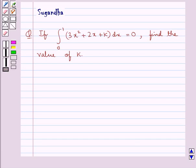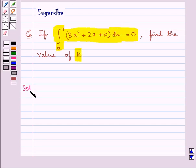Hello and welcome to the session. In this session we discuss the following question: If the integral from 0 to 1 of 3x squared plus 2x plus k dx equals 0, find the value of k. Let's move on to the solution.